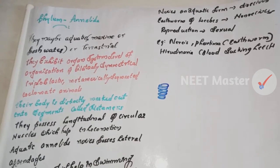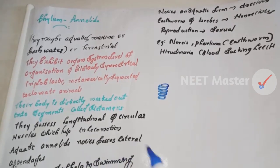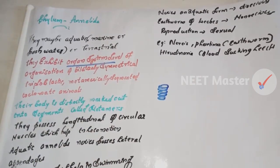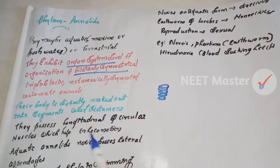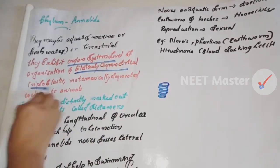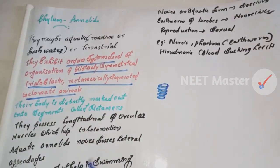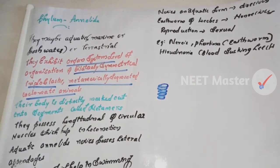Now, phylum Annelida. These are aquatic — marine or freshwater — organisms. They exhibit organ system level of organization. They are bilaterally symmetrical, triploblastic, metamerically segmented, and coelomate animals. The body is distinctly marked out into segments called metamers.